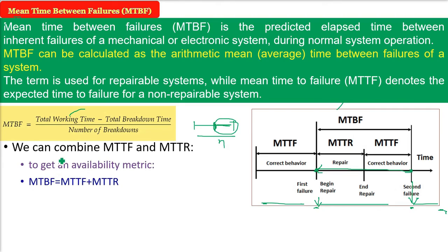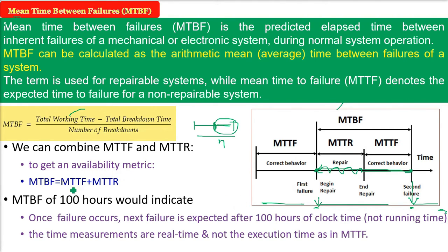We can combine MTTR and MTTF — mean time to repair plus mean time to failure — and that gives MTBF. Something fails, there is time to repair it, the system works fine until the second failure. If MTBF is 100 hours, it means once a failure has occurred, the next failure is expected only after 100 clock hours. This is real clock time, not the execution time of the software or device as used in MTTF. Just add MTTF and MTTR to get MTBF.